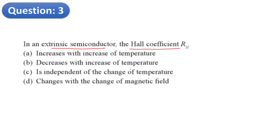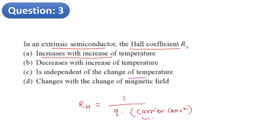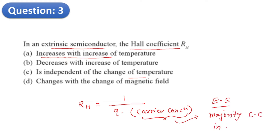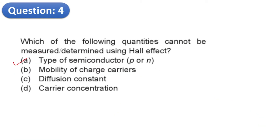Question 3: In an extrinsic type semiconductor, the Hall coefficient RH equals 1 divided by (q times carrier concentration). For an extrinsic semiconductor, the majority charge carriers dominate, and their concentration is independent of temperature. Therefore RH is independent of change in temperature, which corresponds to option C.